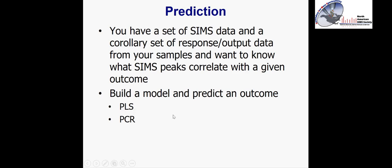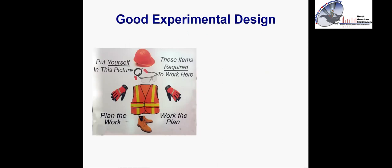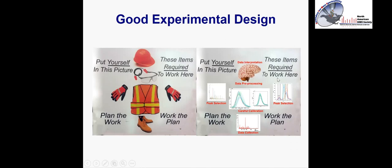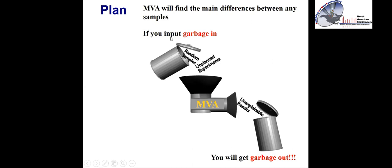When you're going to use multivariate analysis, you need to start at the very beginning with a good experimental design. At the University of Washington, there's a sign on construction site fences that says 'plan the work and work the plan.' We can apply this to SIMS data — we want to make sure we have a good experimental design and carefully carry it out, because otherwise these methods won't help us. If you put garbage in, you're going to get garbage out. You can run any data through a multivariate analysis method, but without a plan, your results probably won't be interpretable or useful.